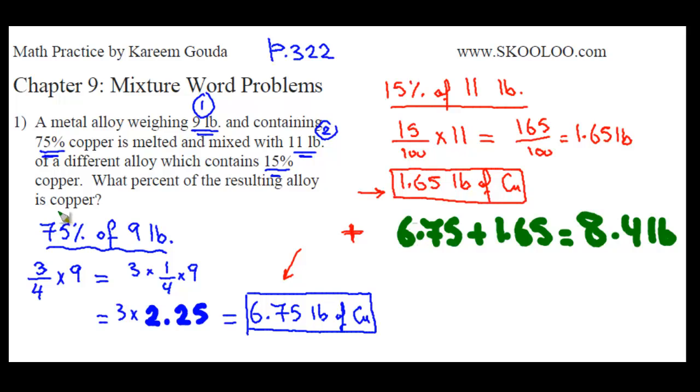Now what percent of the resulting alloy is copper? So we know that 8.4 pounds is copper, divided by what? Divided by the total weight of this alloy, which is the 9 pounds and the 11 pounds. So divided by 20 pounds, which is the total. This is how we're going to get the percentage. And then we do this number, this fraction, or this decimal that we're going to get times 100 to get it into percent. 8.4 divided by 2 is 4.2, and then there's a 0, so it becomes 0.42. So it's 0.42 times 100, which is 42 percent.